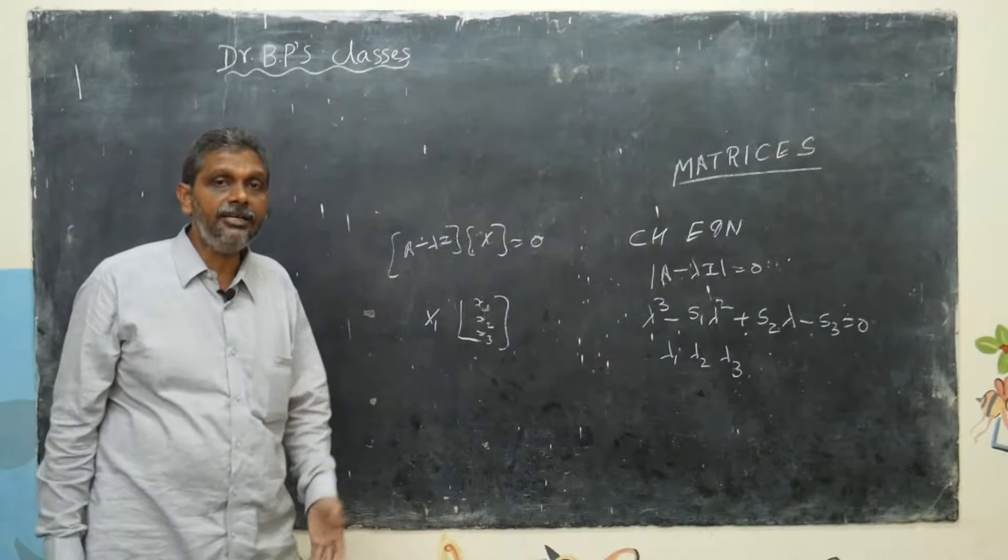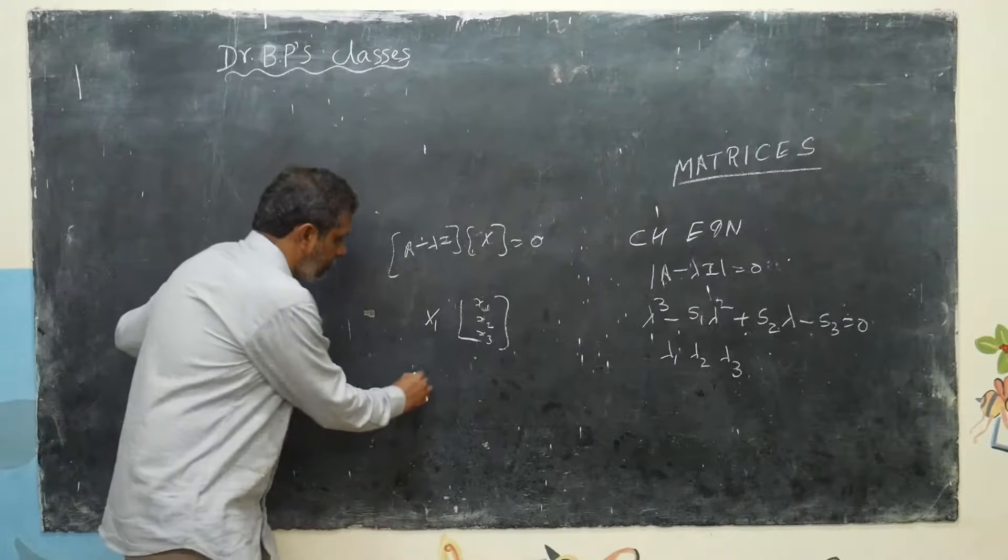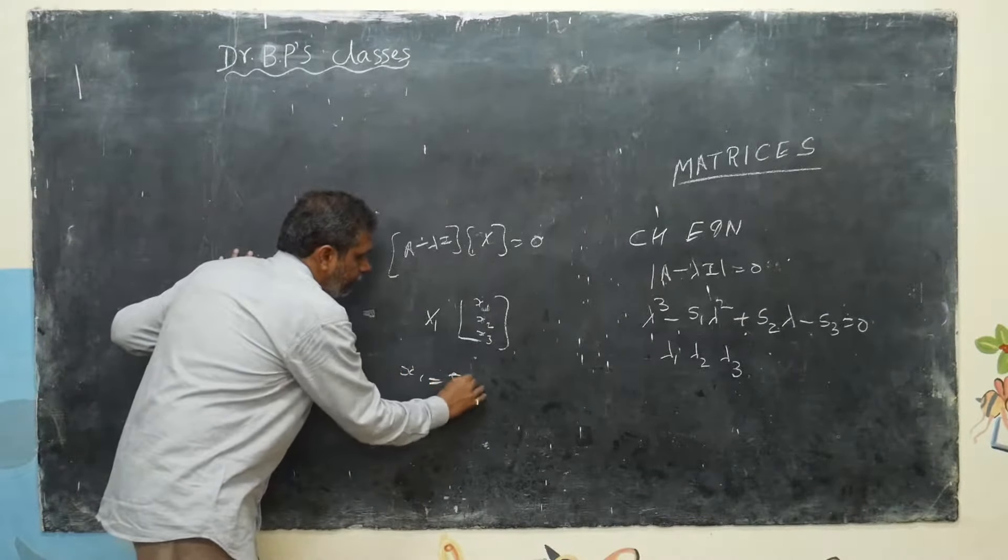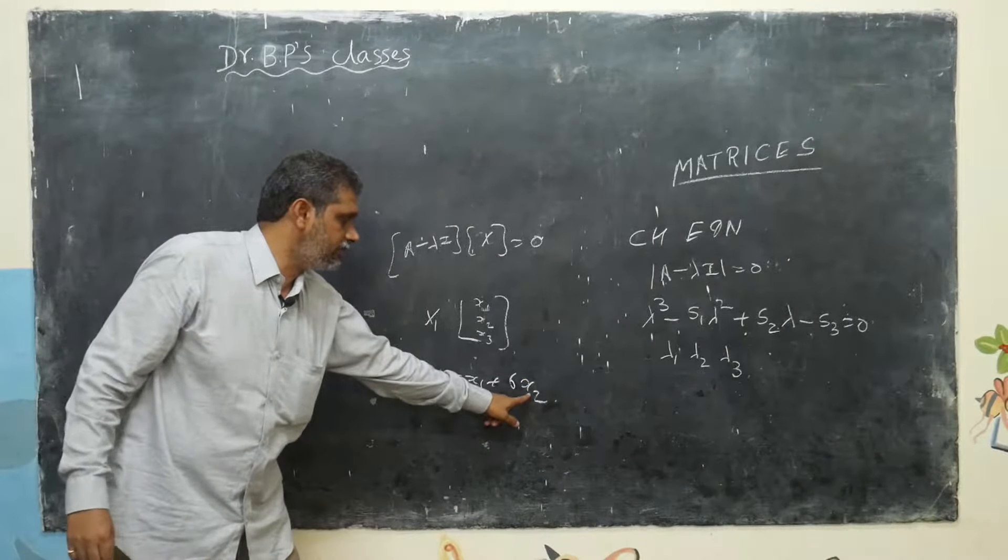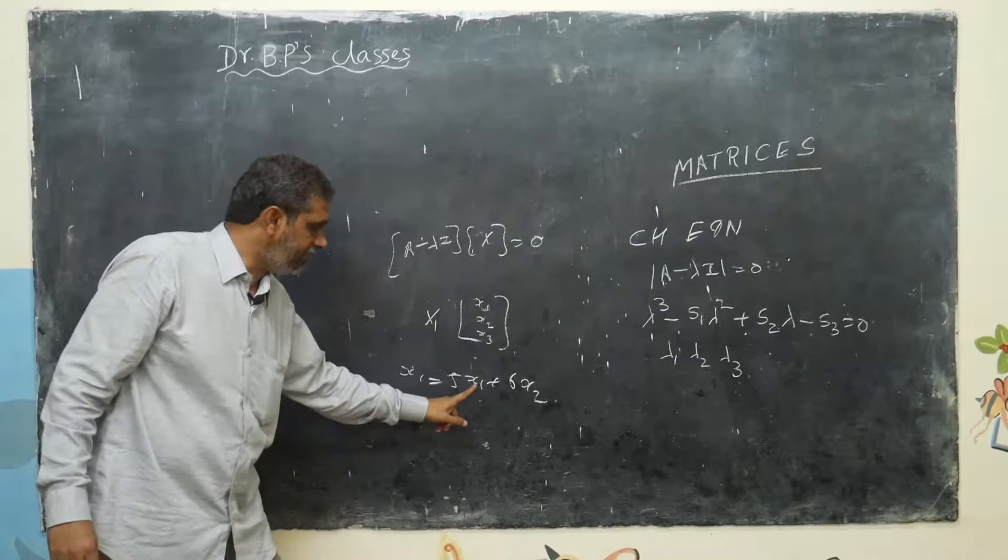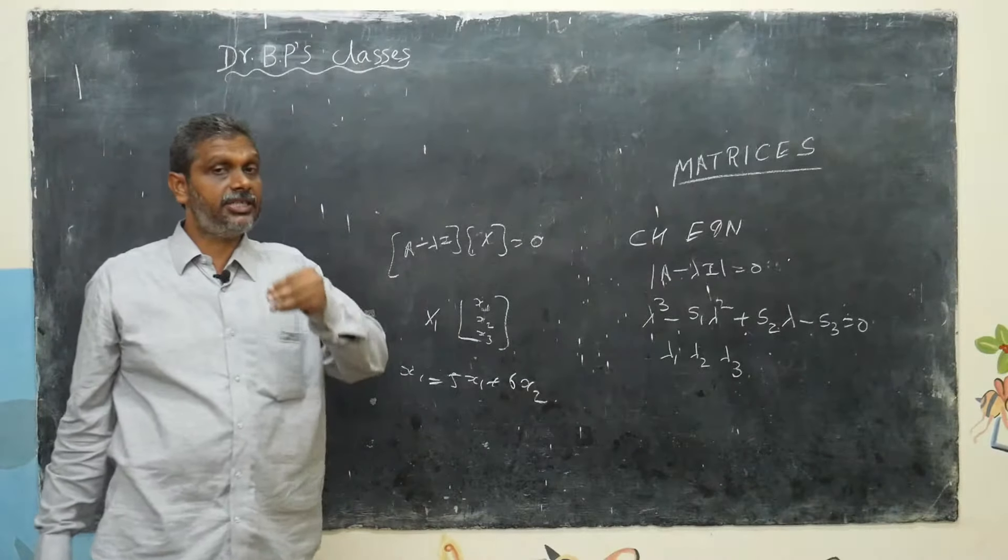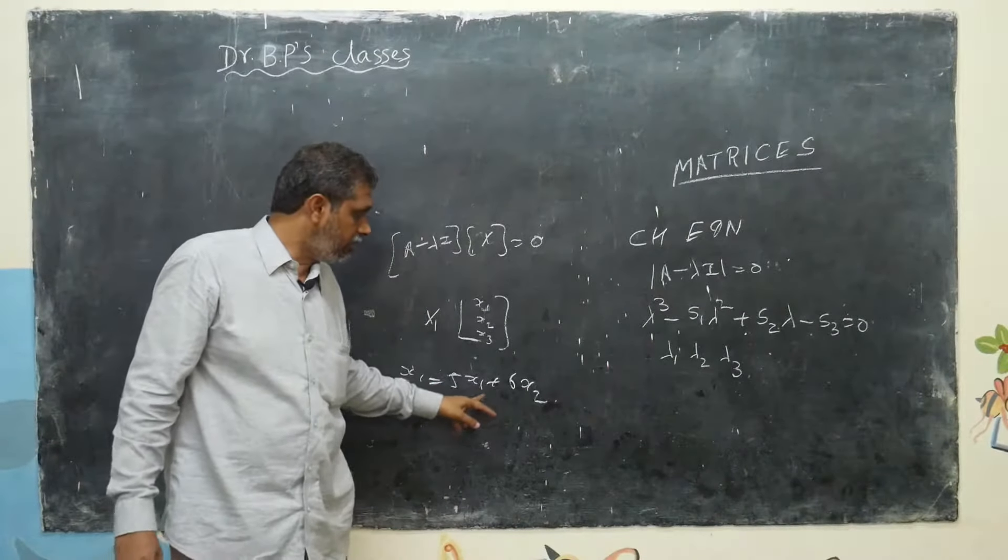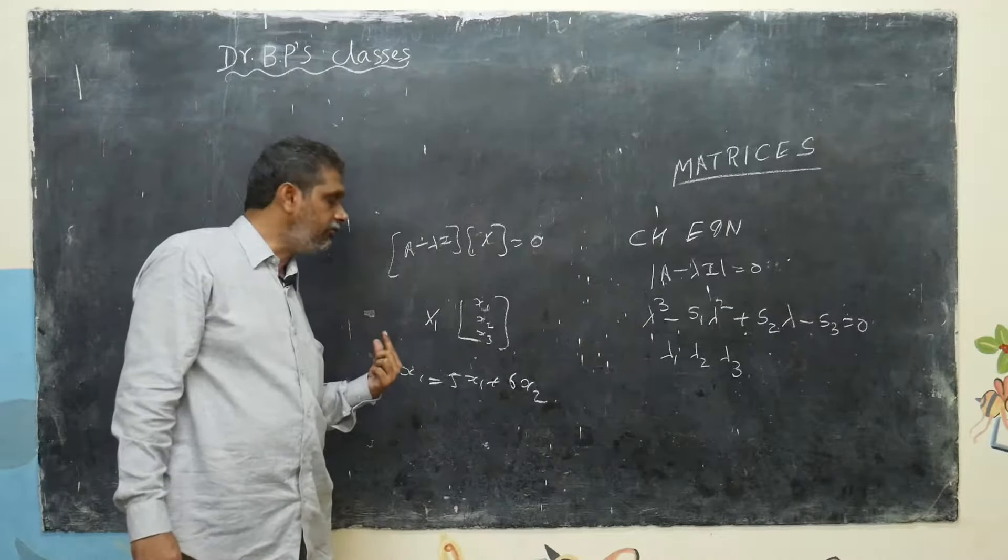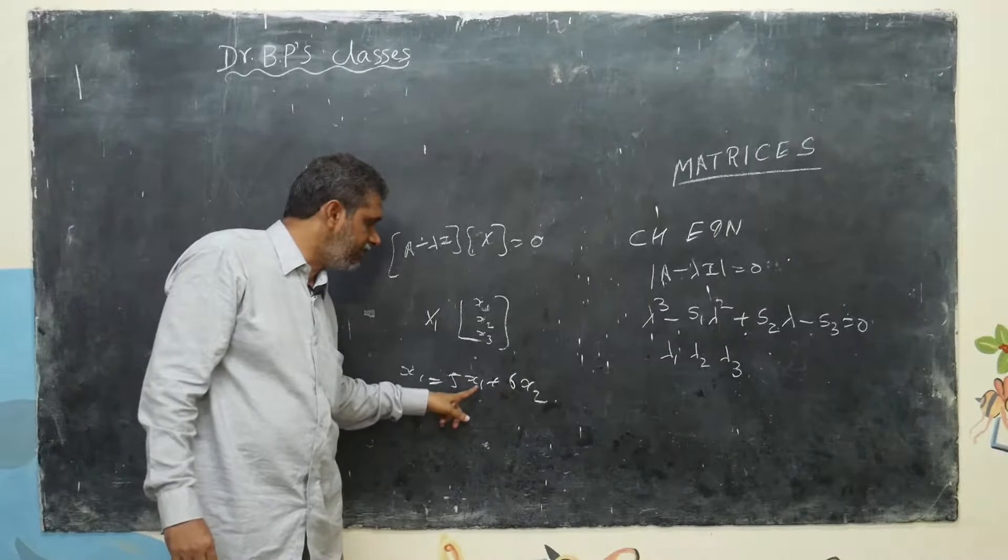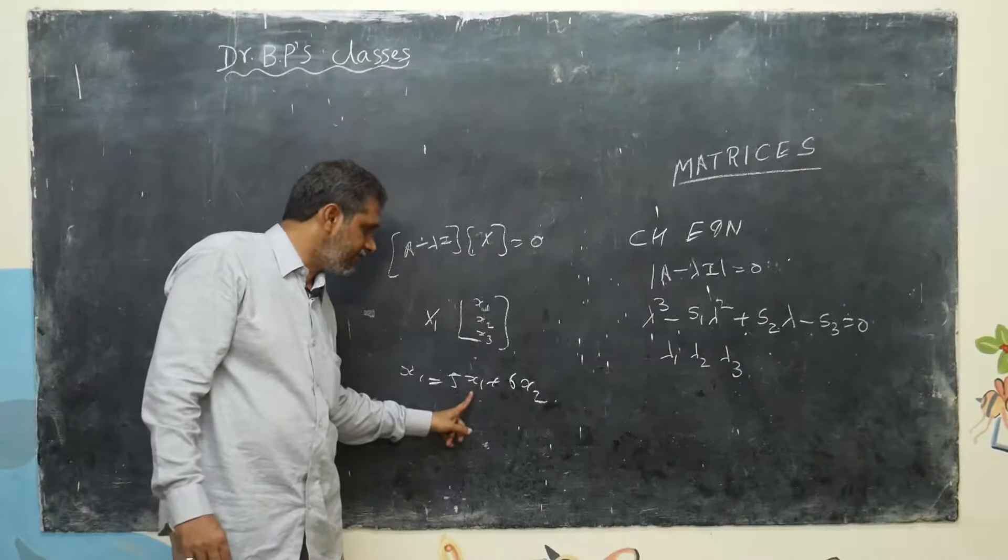Suppose if three eigenvalues are repeated, what you will take? Here also same story - take one equation. Suppose you get x1 equals 5x2 plus 6x3. First case: put x2 equals zero, x3 one. Then x1 equals zero, x2 equals one. Next third case, how you will do? Choose x2 and x3 value to make this fellow zero. How? x2 you can take this coefficient 5 into 6, 6 into 5. Take x2 is 5, x3 is what?